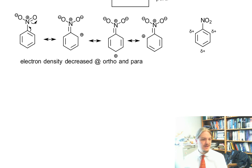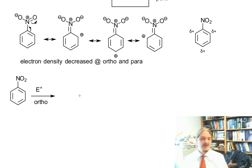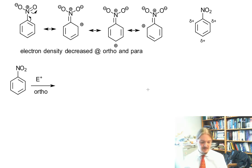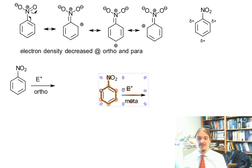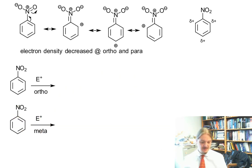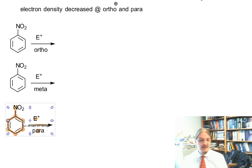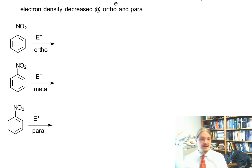I'm going to continue using nitro as my deactivator of choice, but in fact any deactivator is going to do this. Just like in the activator case, this is independent of the identity of the electrophile, so I'm only going to talk about generic electrophiles. We can also consider a different explanation by looking at the resonance structures of the intermediates.